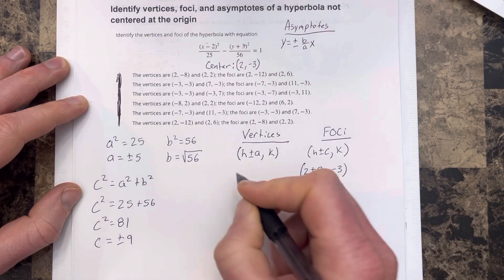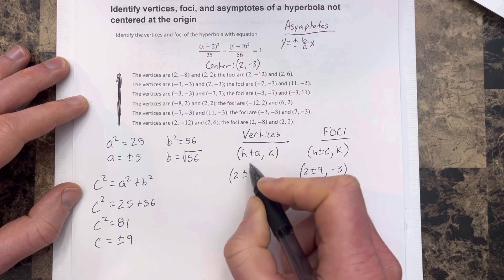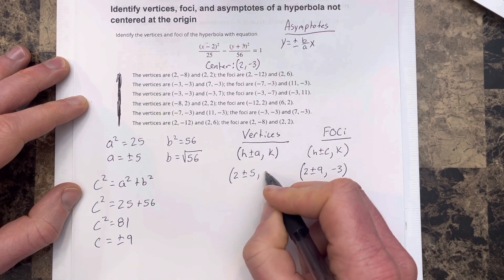And then for the vertices, we're going to have h, which is 2, plus minus a, which was 5, comma k, which is negative 3.